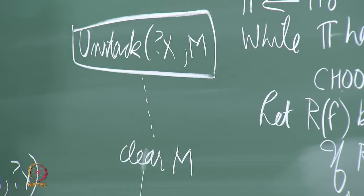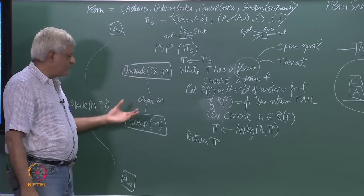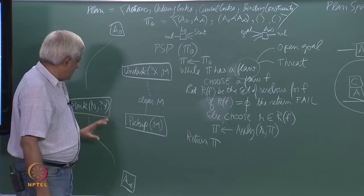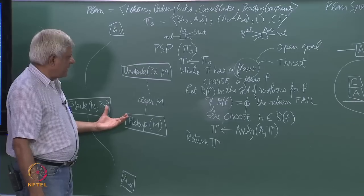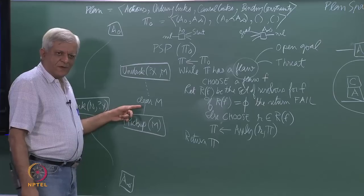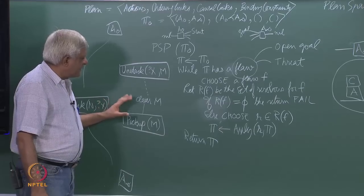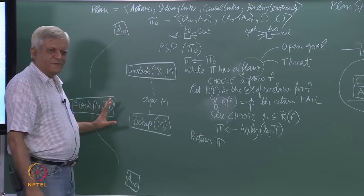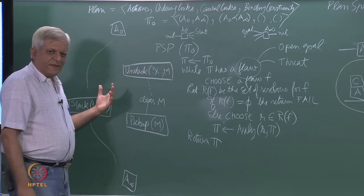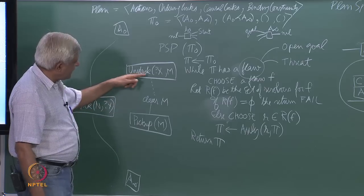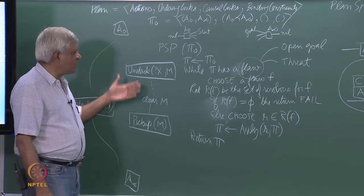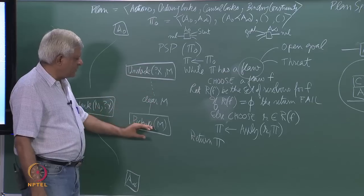For the open goal clear(m), we add action unstack(?x, m), which produces clear(m) via a causal link to pick-up(m). Once we insert this action into the plan — alongside the existing a₀, a∞, stack(n,?y), and pick-up(m) — the plan now has a threat. The threat is to this causal link: stack(n,?y) could come between unstack(?x,m) and pick-up(m) if ?y binds to m, destroying clear(m).